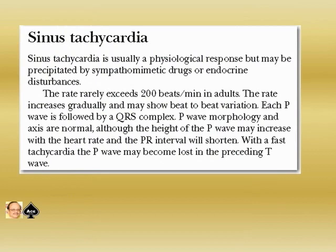Now let us see what is sinus tachycardia. Sinus tachycardia is usually a physiological response but may be precipitated by sympathomimetic drugs or endocrine disturbance — for example, salbutamol or terbutaline nebulization. The rate rarely exceeds 200 beats per minute in adults. The rate increases gradually and may show beat-to-beat variation. Each P-wave is followed by a QRS complex. The P-wave morphology and axes are normal, although the height of the P-wave may increase with heart rate. The PR interval will shorten. With fast tachycardia, the P-wave may become lost in the preceding T-wave.